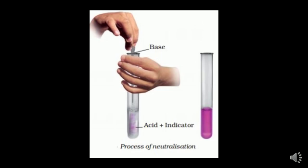We have learned that acid turns blue litmus red and bases turn red litmus blue. Now let us see what happens when an acid is mixed with a base. We are going to use an indicator we have not used so far — it is called phenolphthalein. Here is an experimental setup to understand this better.